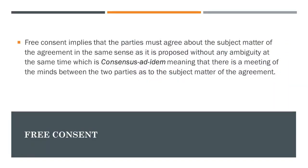Now let us see what is free consent. Free consent implies that parties must agree about the subject matter of the agreement in the same sense as it is proposed, without any ambiguity — which is consensus ad idem, meaning the meeting of minds between two parties on the subject matter of agreement. Free consent means both parties should be thinking in the same line and have identity of mind. A business cannot run in two directions if partners don't have equal and same thinking, so there must be transparency in the business.